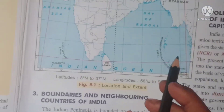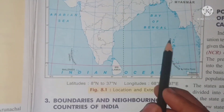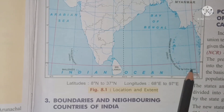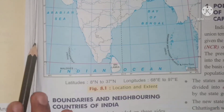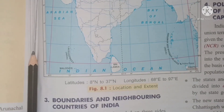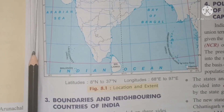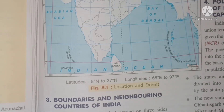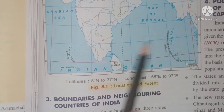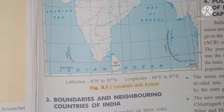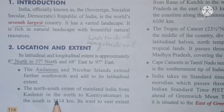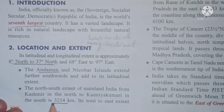Due to the Andaman and Nicobar Islands, India's extent stretches further southward, extending the latitudinal extent. The north-south extent of mainland India, from Kashmir in the north to Kanyakumari in the south, is 3,214 kilometers. Let me show you on the map.